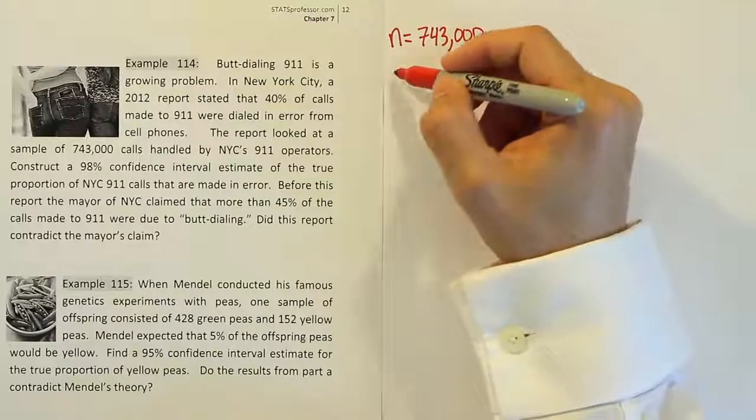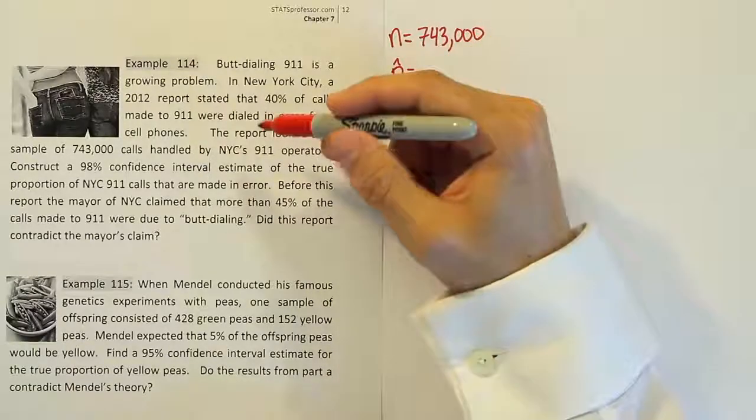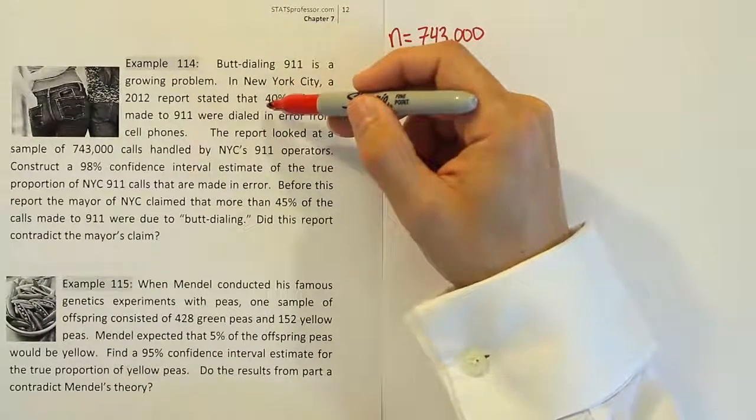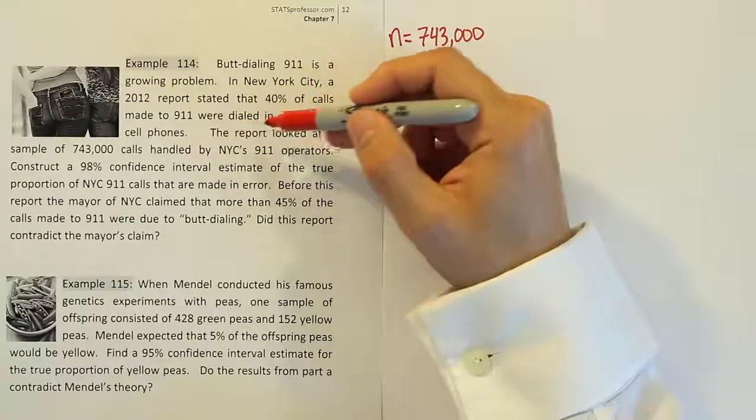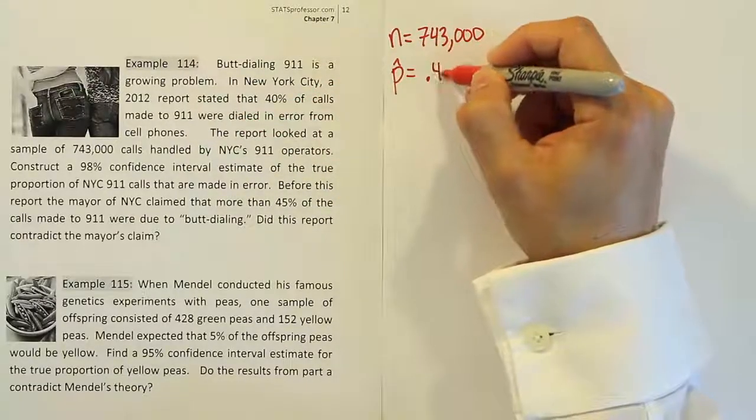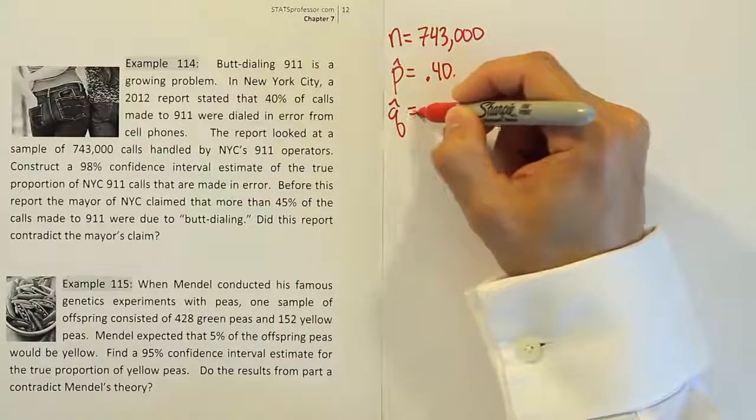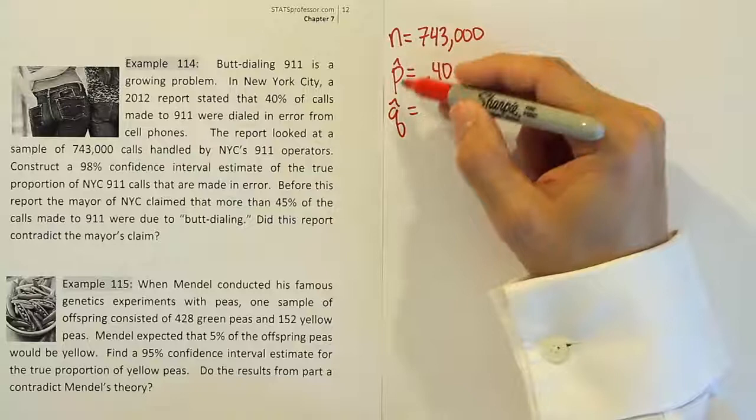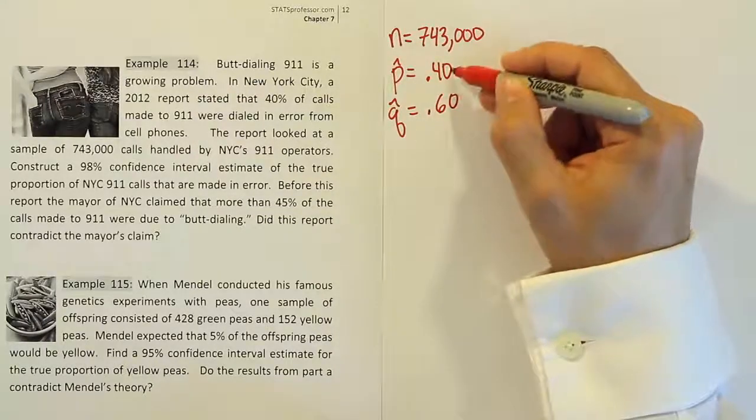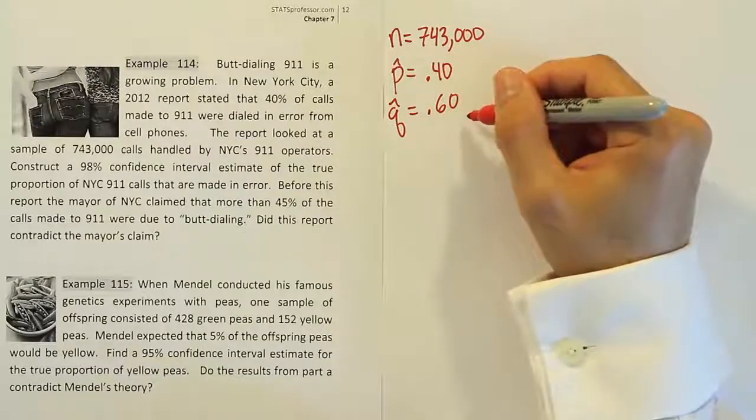And then they say that the proportion, the sample proportion, of those calls that were made in error, it says that a 2012 report stated that 40% of the calls made were dialed in error. So 40%, that's 0.40. And then that would lead to a q hat, the sample proportion and then its complement. That's going to be 60%, because these two must add to 100. So you would do 1 minus 0.40 and you'd get 0.60.